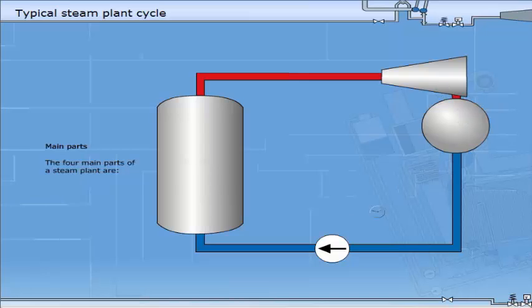The four main parts of a steam plant are boiler, turbine, condenser, and feed water pump.